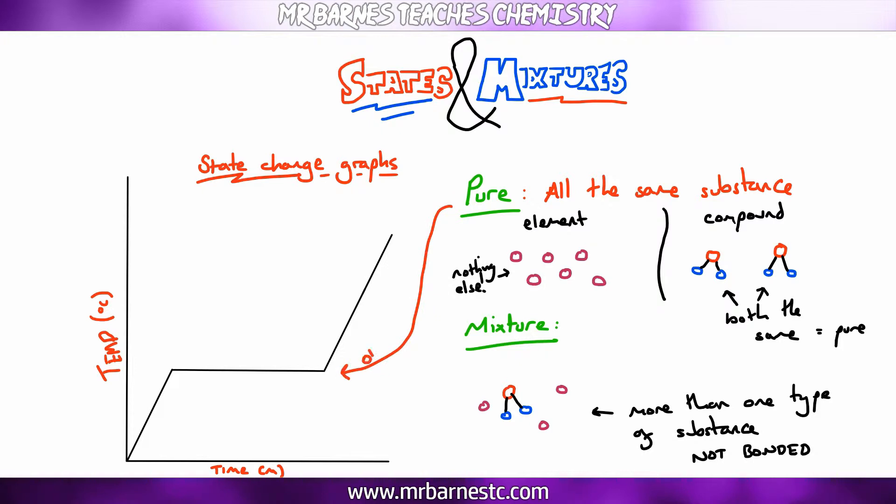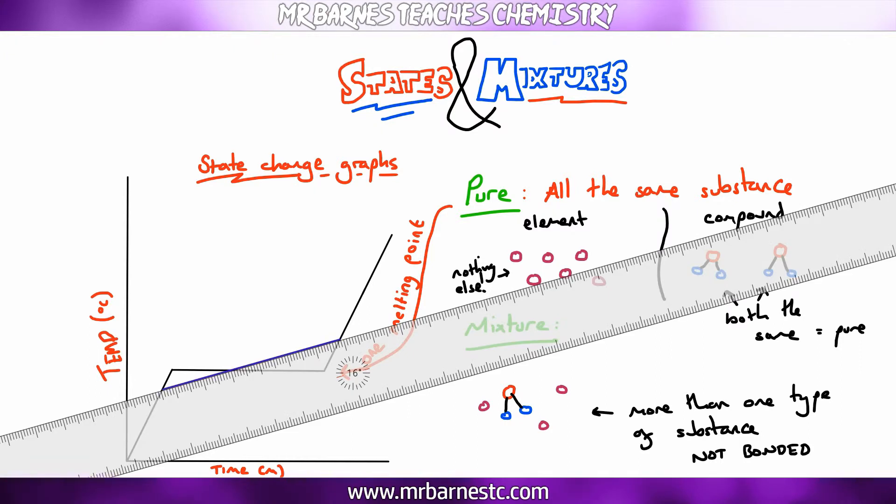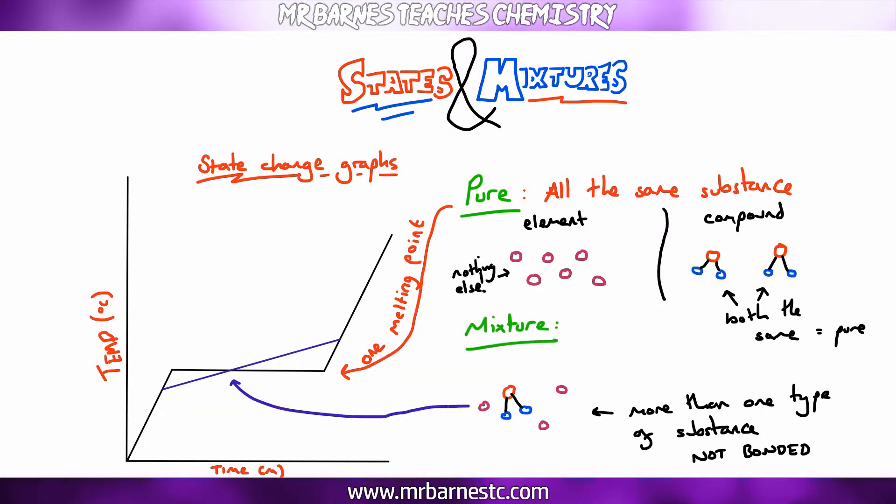Now on your state change graphs, you will know if something's pure or not, because it will only have one melting point. It will be flat. If you have a diagonal melting point, like you can see here, so it's not flat, it means you've got a range of melting points. That tells you it's a mixture.